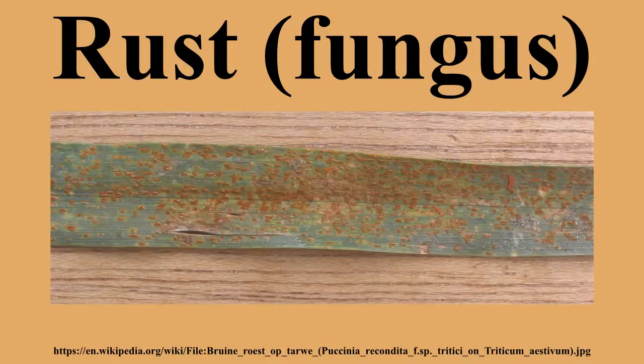Rusts are plant diseases caused by pathogenic fungi of the order Puchiniales. An estimated 168 rust genera and approximately 7,000 species, more than half of which belong to the genus Puccinia, are currently accepted. Rust fungi are highly specialized parasites with several unique features.